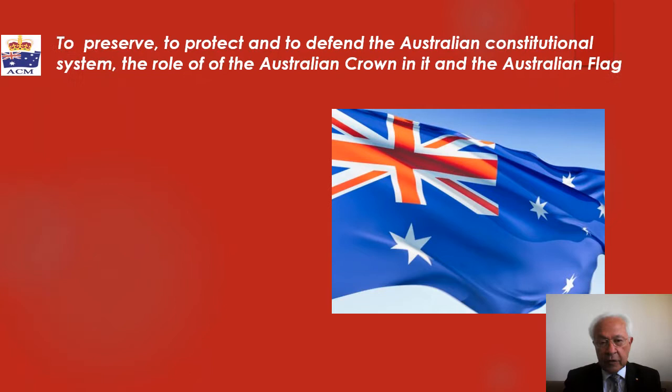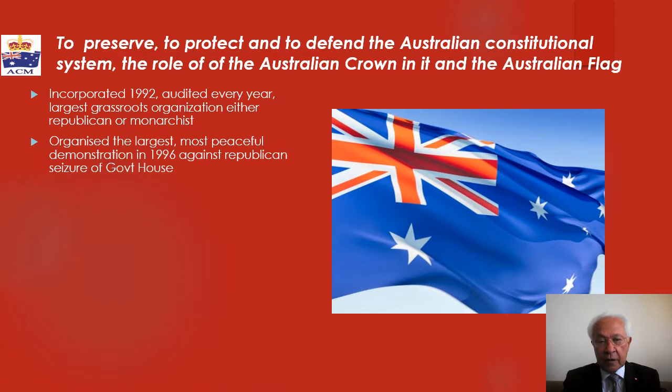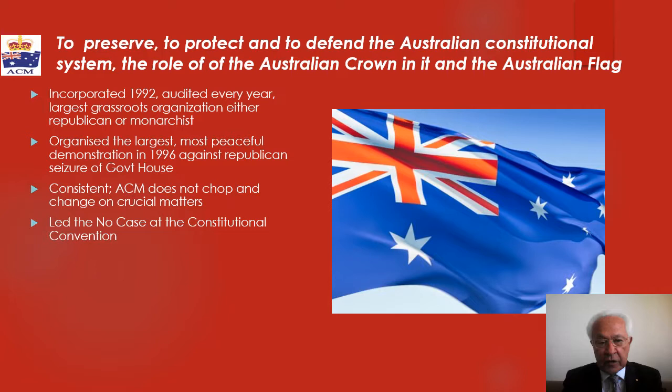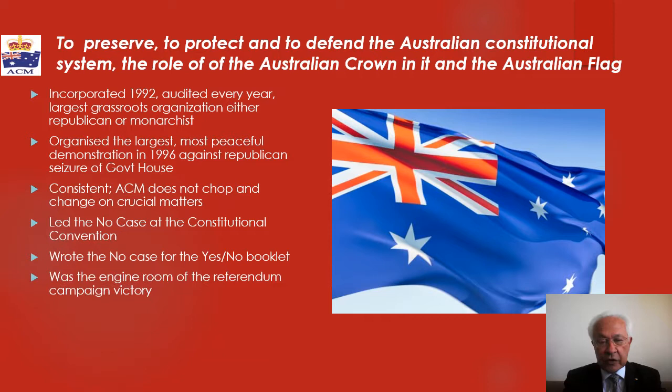This report came from Australians for Constitutional Monarchy. We are the largest and oldest grassroots organisation in Australia. We provided the engine room for the victory in the 1999 referendum. I do invite you to join us. There's no fee for joining, and there never has been. We represent Australians in preserving, protecting and defending the Constitution, the role of the Crown in it, and the Australian flag. Do join us at norepublic.com.au.